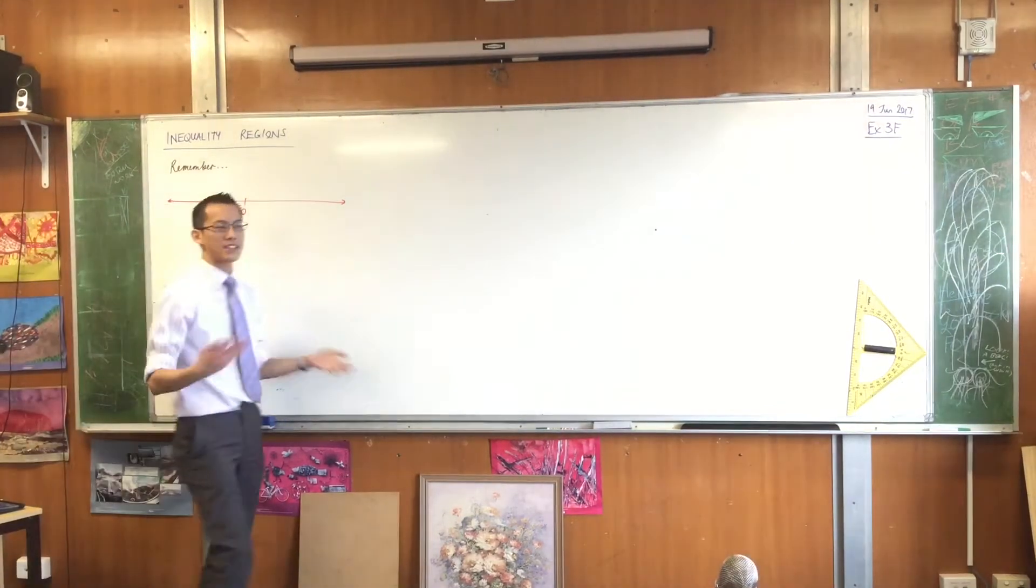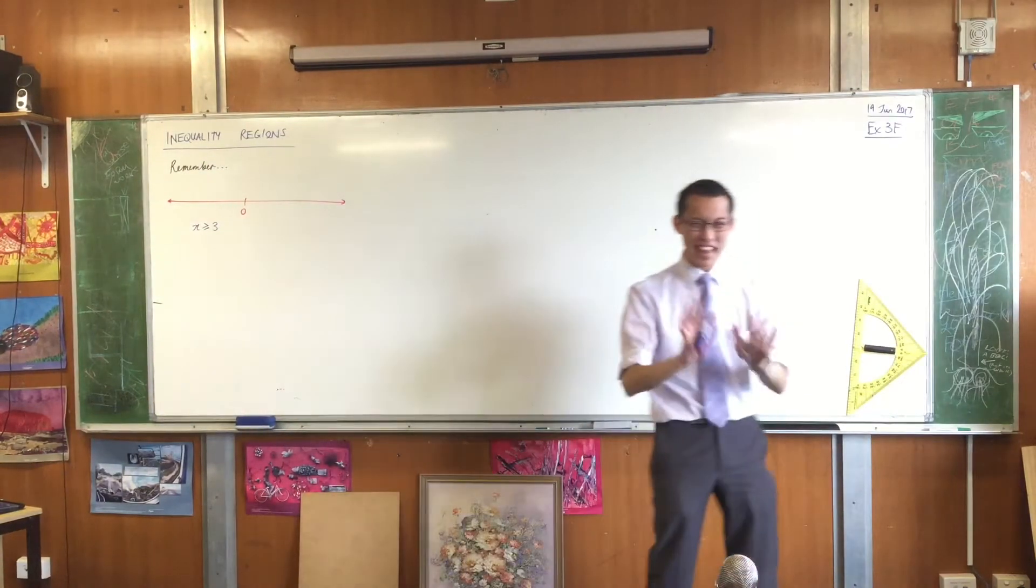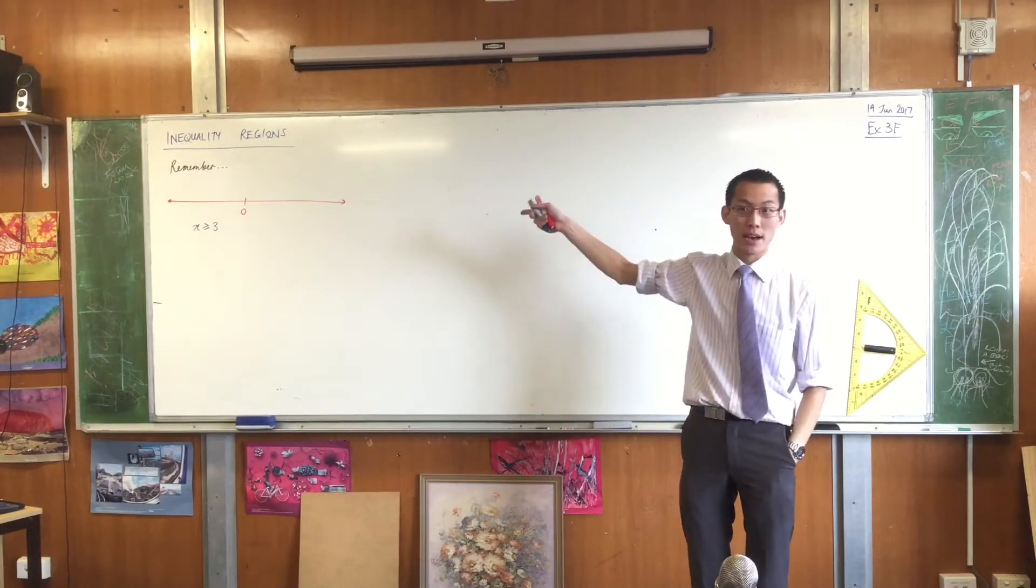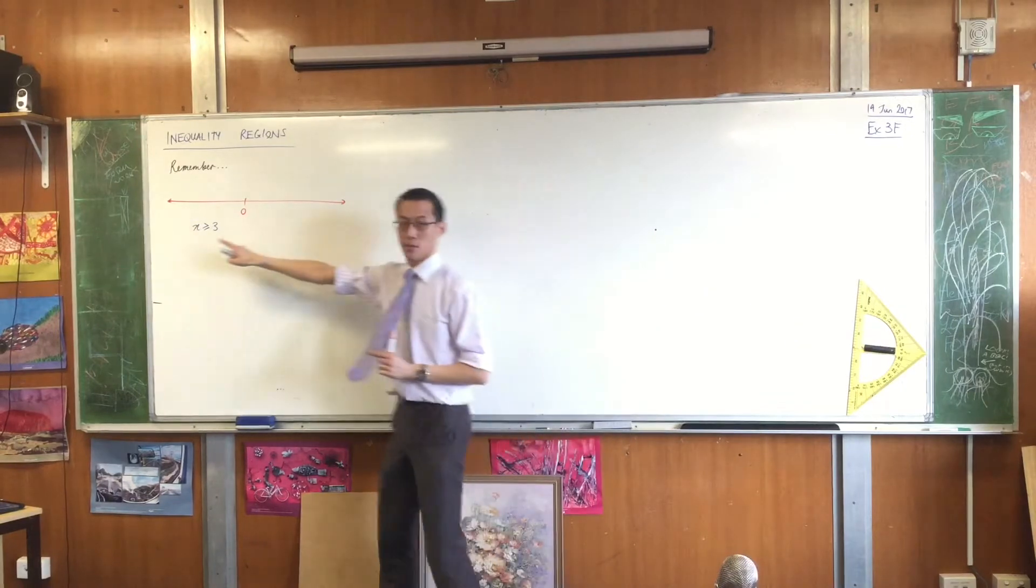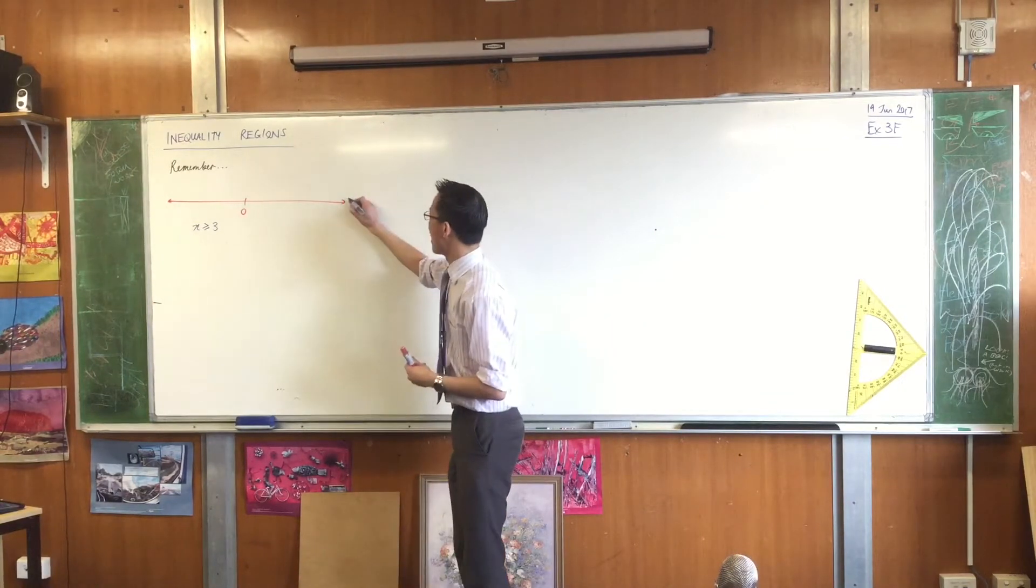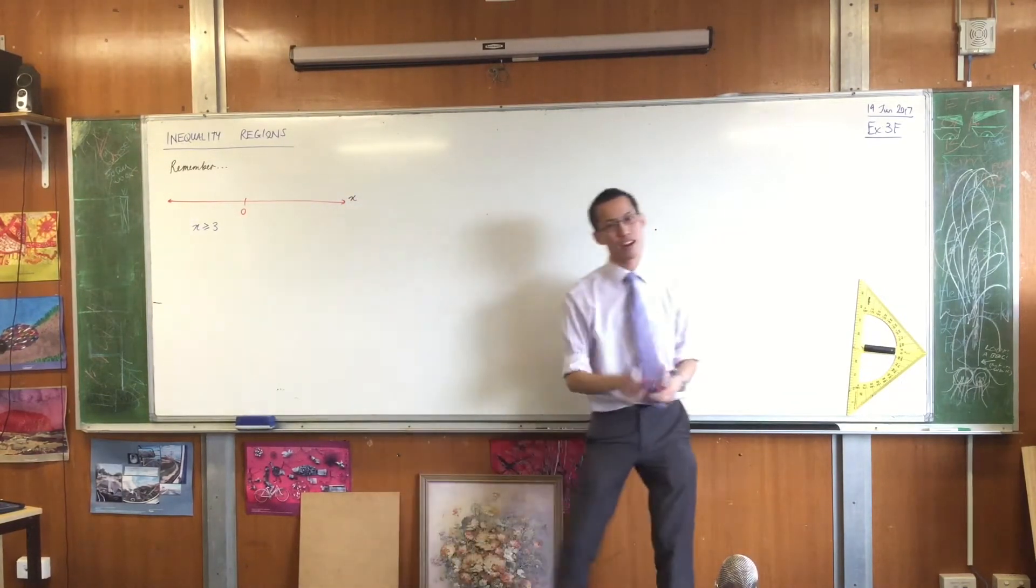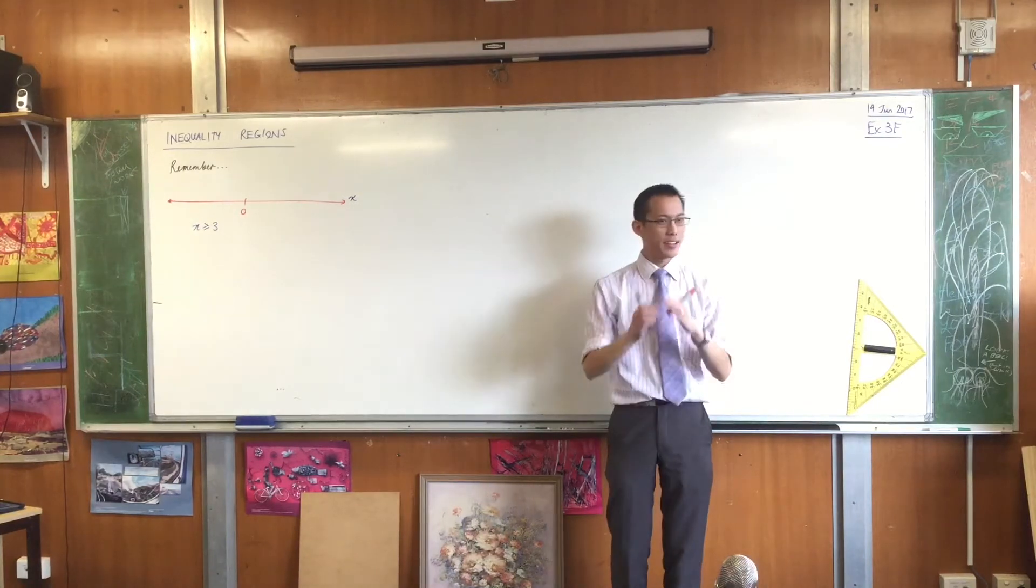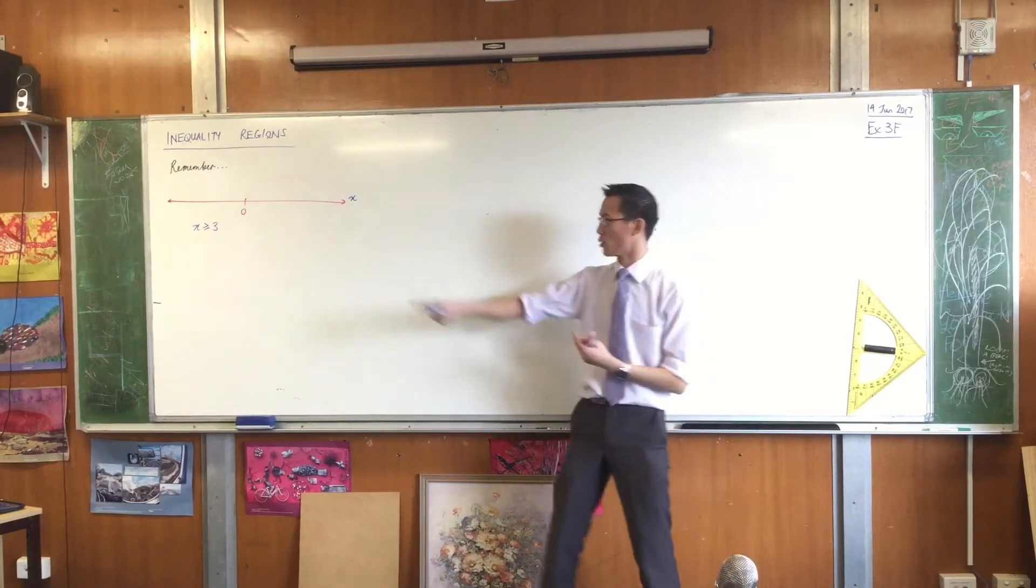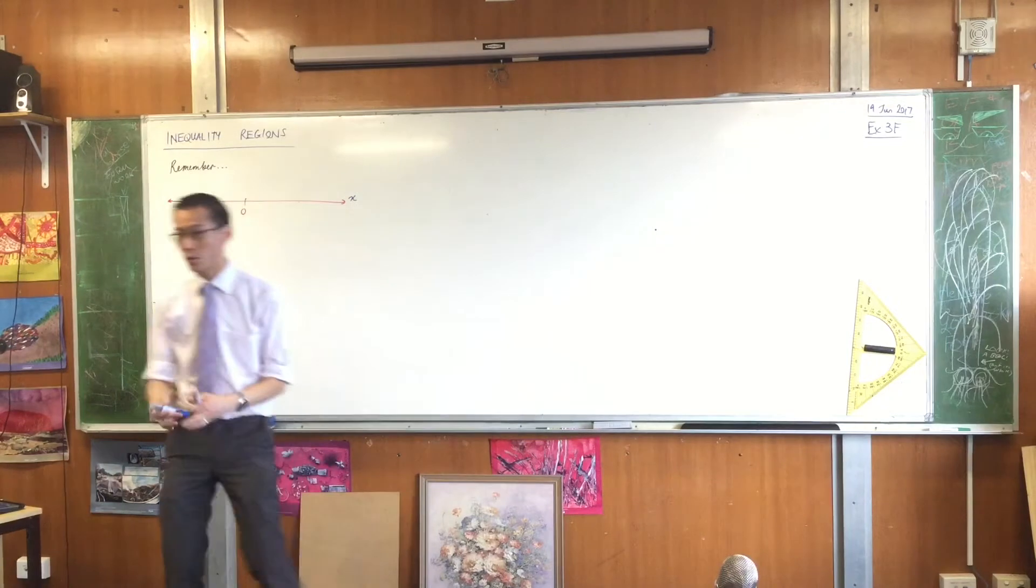I can say x is greater than or equal to 3, and then I can represent that visually on the number line. If I've got a single variable x, then I just draw a number line for that variable, and I find the space that represents all of the solutions for x is greater than or equal to 3.